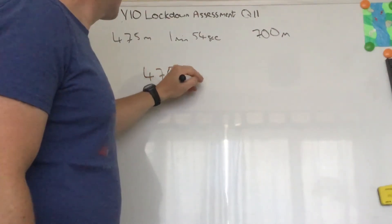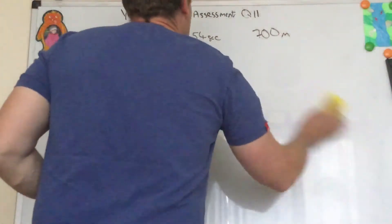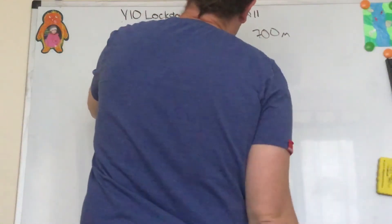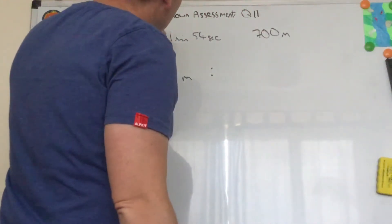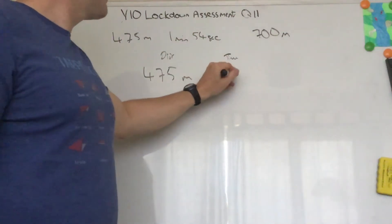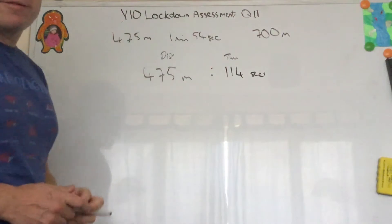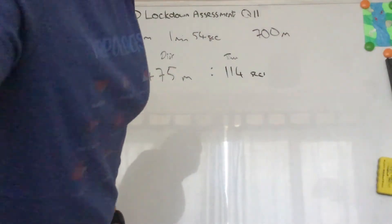475 meters takes her... we can use a ratio really, so distance that's time. Change the time to seconds, so 60 plus 54, 114 seconds. So it's just 475 meters in 114 seconds.